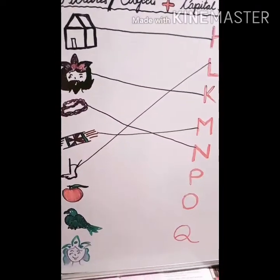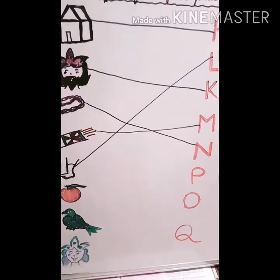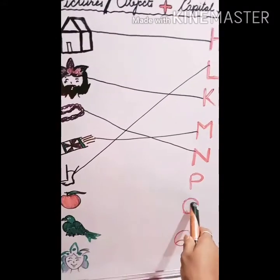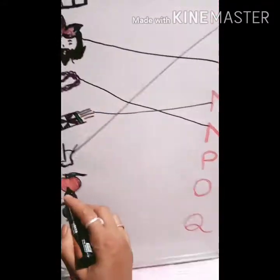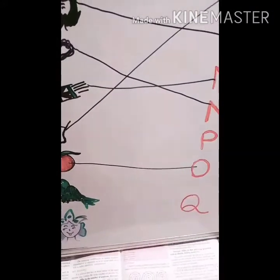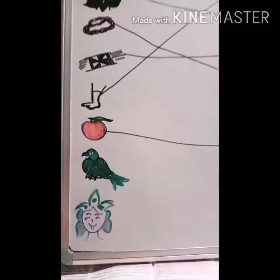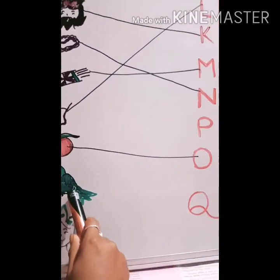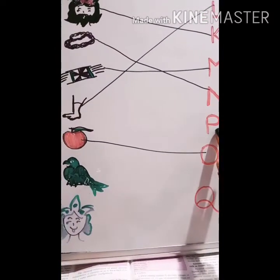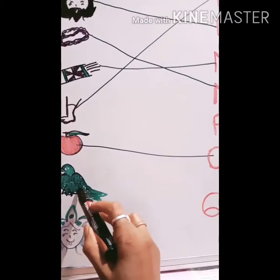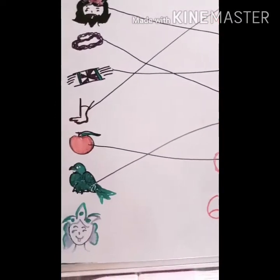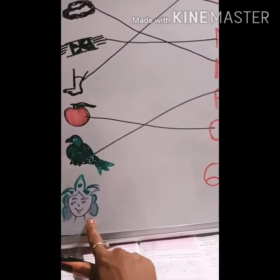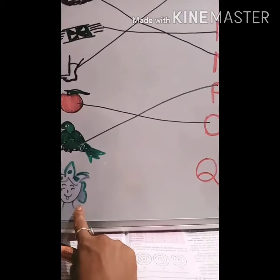They will enjoy joining this. Let them enjoy doing this. Next is orange — O for orange. Next, P for parrot. Where is P? Here. And the last option is Q — Q for queen.